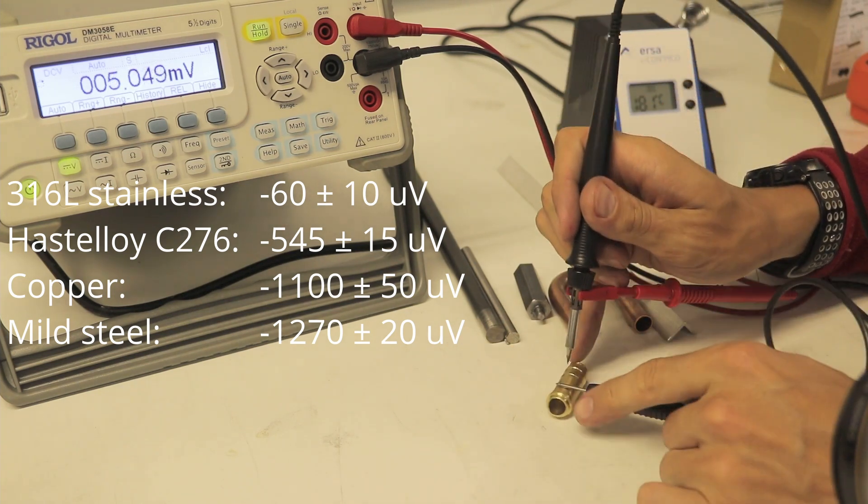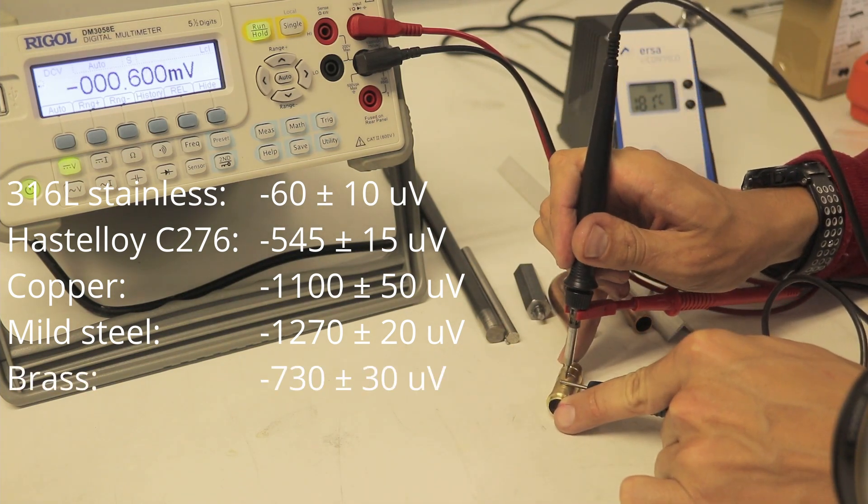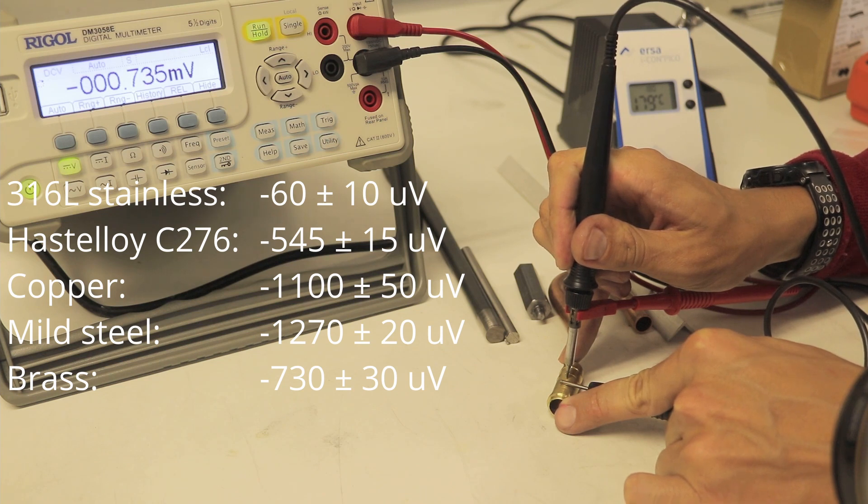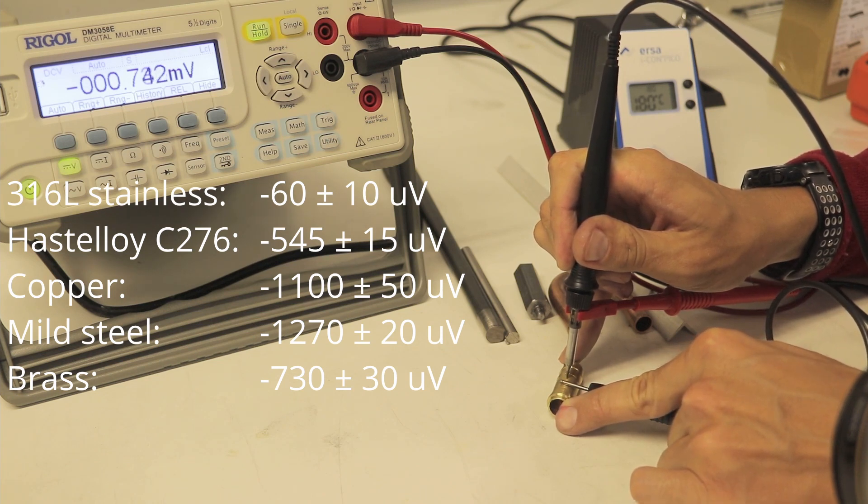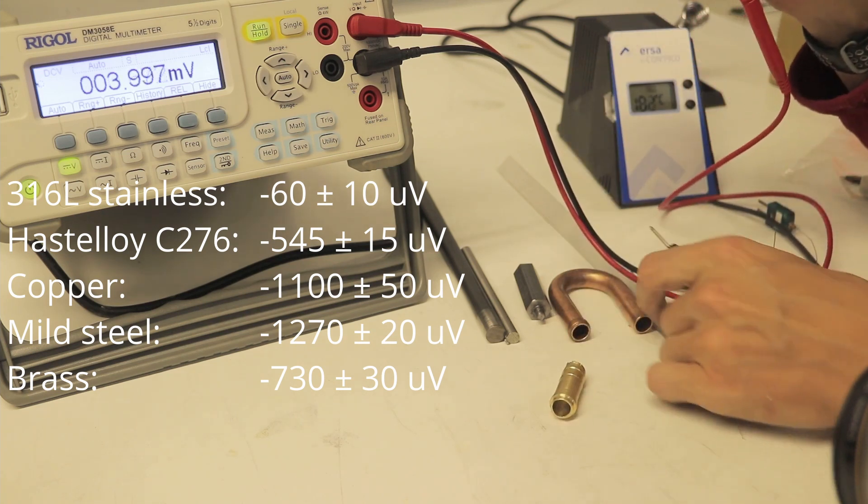Brass. Minus about 740 microvolts. Again, huge difference.